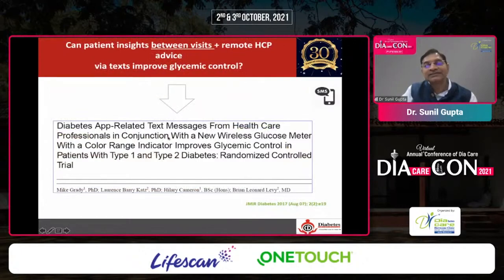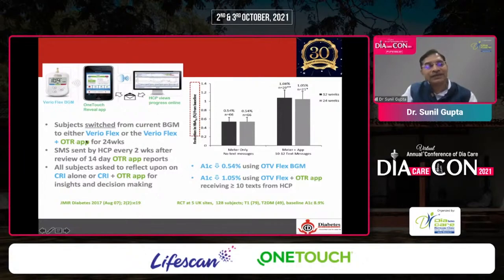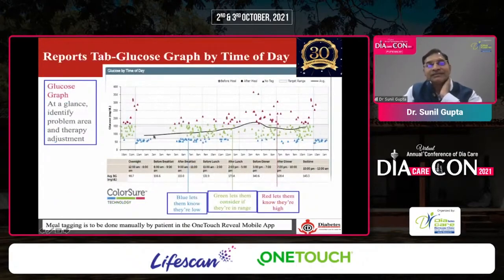Another study showed that text messages from healthcare professionals in conjunction with a new wireless glucose meter with color range indicator improves glycemic control in both type 1 and type 2 diabetes. Published in 2017 with 128 patients across five UK sites switched from their current blood glucose monitor to the Verio Flex — half using the app, half not — HbA1c reduction was 0.5% with the app versus 0.1% without. Additional reduction in HbA1c was observed when using the glucometer with the app. The data display looks like condensed glucose monitoring readings with color coding: blue for low, green for acceptable, red for high.